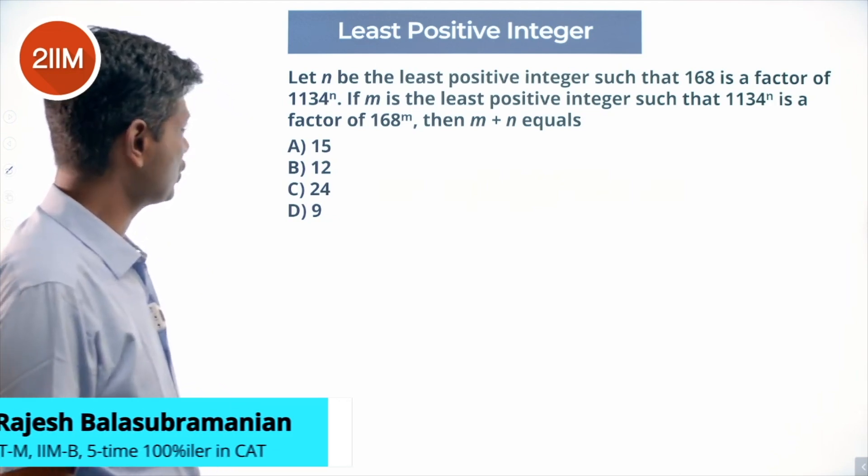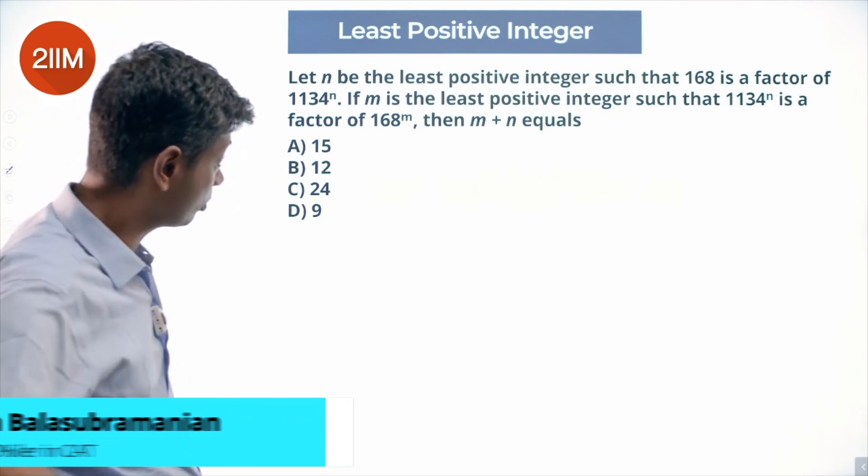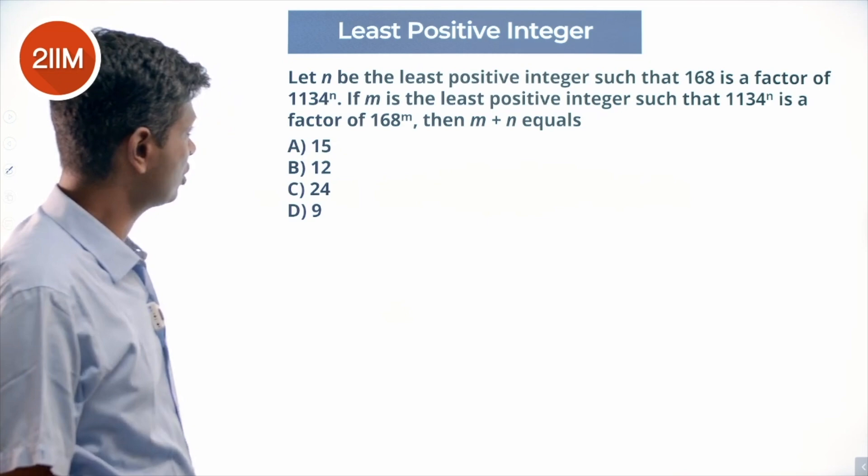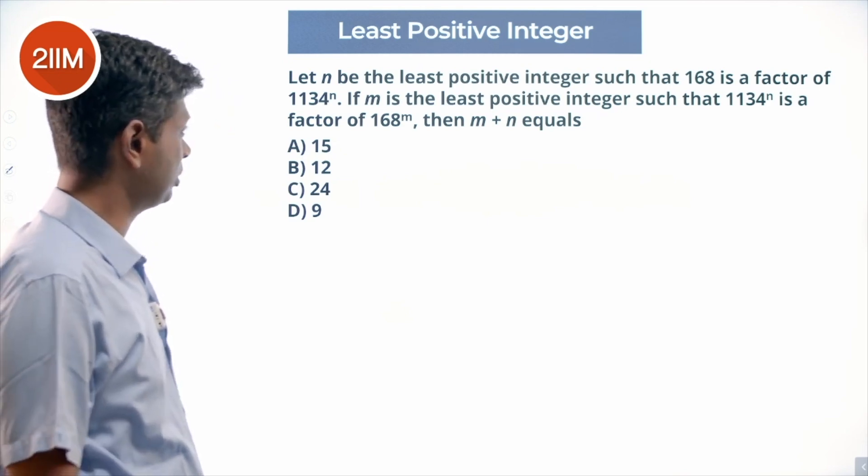Let n be the least positive integer such that 168 is a factor of 1134^n. If m is the least positive integer such that 1134^n is a factor of 168^m, then m plus n equals?